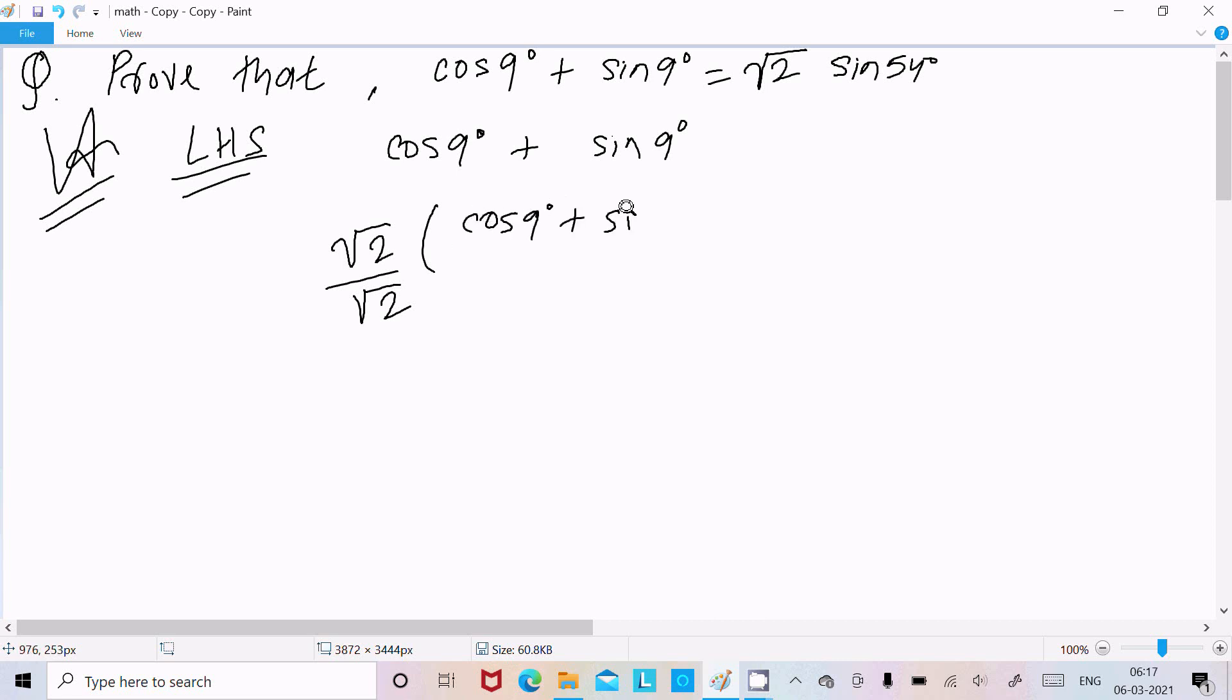So on numerator multiply with √2, because on the right side √2 is there. Now here after √2, this will multiply with cos 9 + sin 9.